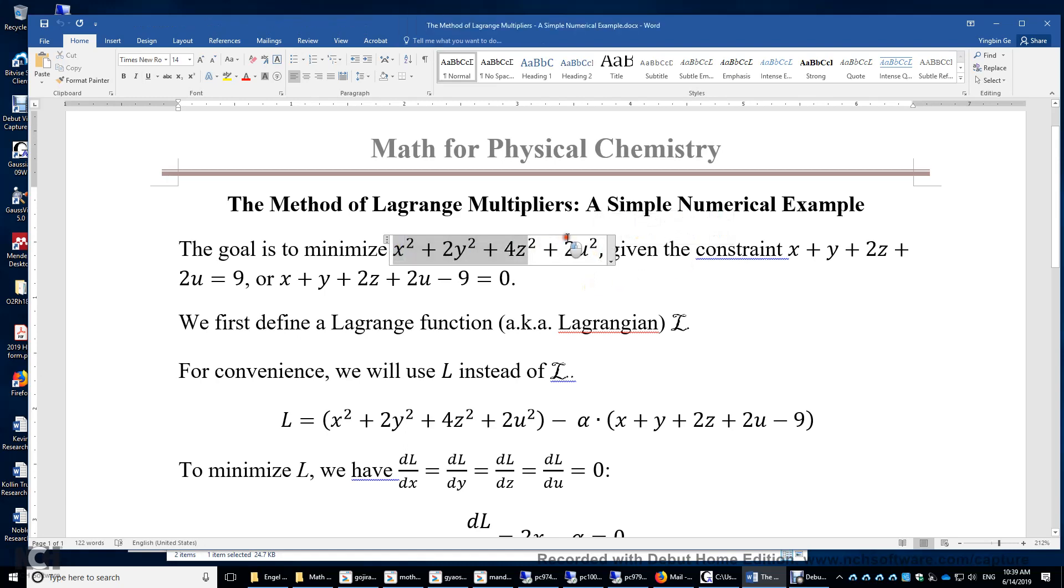So then how do we minimize the function under a constraint? Well, we can do the traditional variable substitution. We can set x equals 9 minus y minus 2z minus 2u. That will help us to reduce the number of variables from 4 to 3, and also incorporate the constraint here by substituting x with 9 minus y minus 2z minus 2u. And then we take the first derivative of this function with respect to y, z, and u. We can solve this function. We can obtain the minimum value.